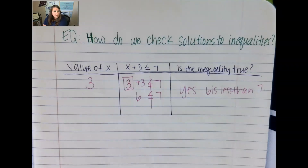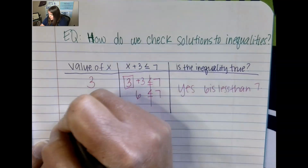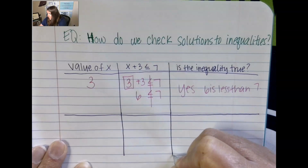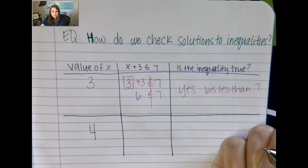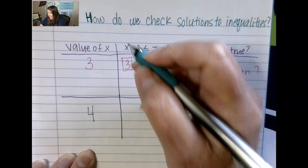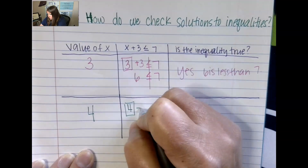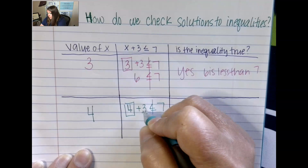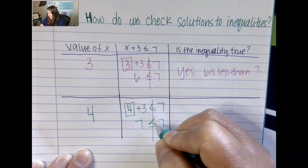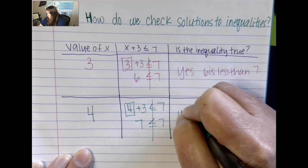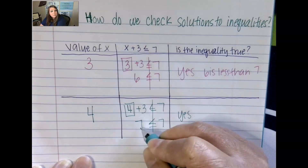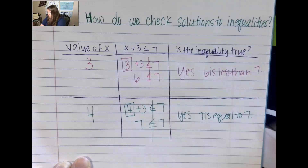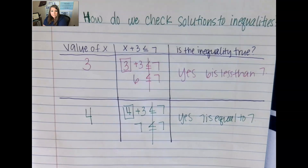Now let's use the value 4. We substitute in 4 for x, so it says 4 plus 3 is less than or equal to 7. 4 plus 3 is 7. Is 7 less than or equal to 7? Yes, because 7 does equal 7. So this is a solution — it makes the statement true.